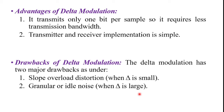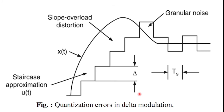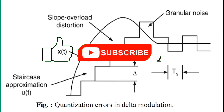We will now discuss slope overload distortion and granular noise in detail. In this figure, the message signal or input signal and the staircase approximated signal are shown. Slope overload distortion arises because of the large dynamic range of the input signal.